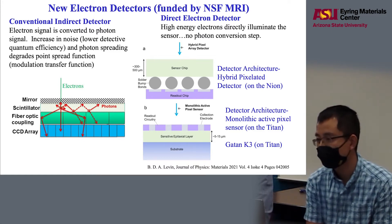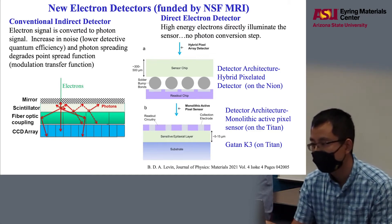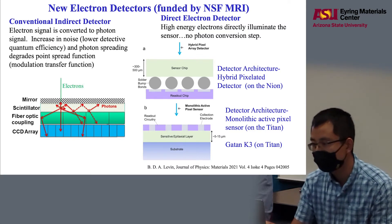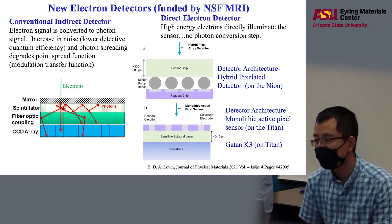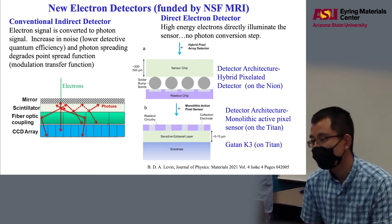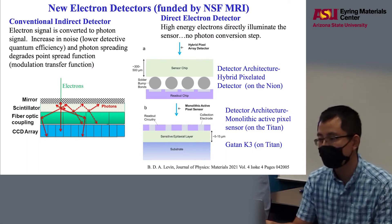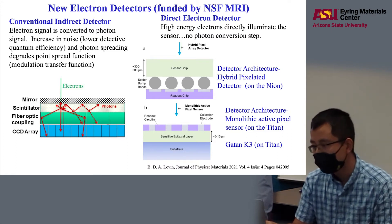There are two different types of direct electron detectors. For example, we have introduced a detector on the Neon microscope. It is a hybrid pixelated detector, where the electron goes to a sensor chip and then to the readout chip. The benefit of this design is that it is sensitive to low voltage. So the Neon microscope can do good EELS and also diffraction imaging under 30 kV, 60 kV, and 100 kV.